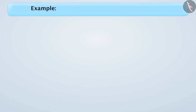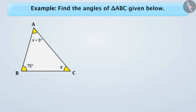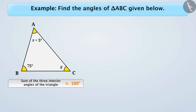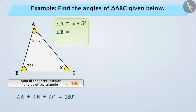Next example. Find the angles of triangle ABC given below. The angle-sum property of a triangle tells us that the sum of interior angles is 180 degrees. So, here, we can write it as angle A plus angle B plus angle C is equal to 180 degrees. Here, angle A is equal to x plus 5 degrees, angle B is equal to 75 degrees, and angle C is equal to x.